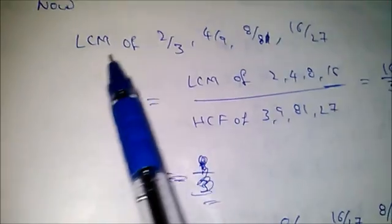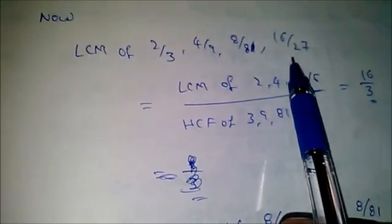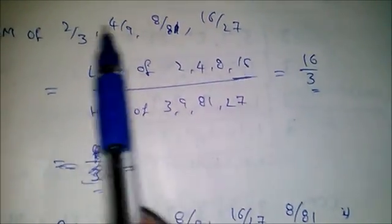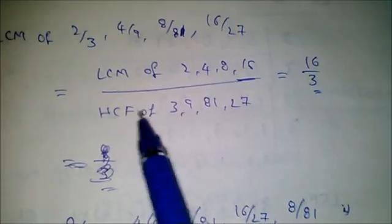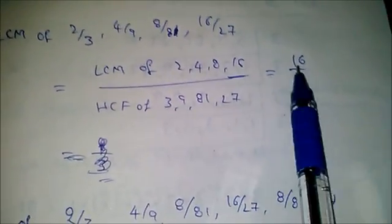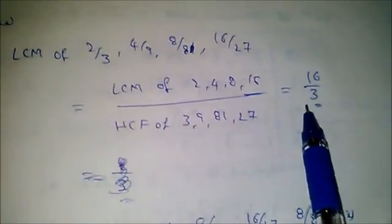Now substitute these values. LCM of 2/3, 4/9, 8/81, 16/27 equals LCM of numerators (2, 4, 8, 16) divided by HCF of denominators (3, 9, 81, 27), which is 16 divided by 3.